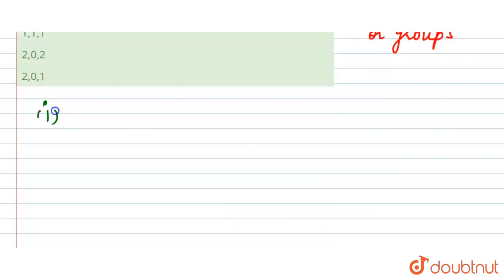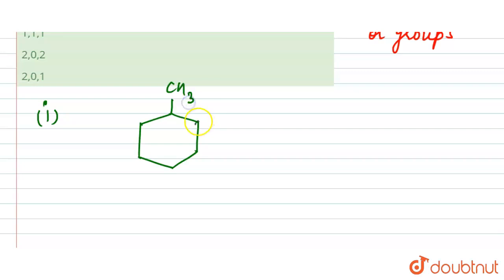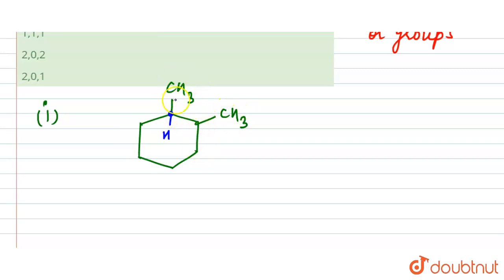First is 1,2-dimethylcyclohexane. We have the cyclohexane ring with methyl groups at the first and second positions. If we consider carbon 1, it has one H, one methyl group, and two different chain portions — so this carbon has four different groups, making it chiral.